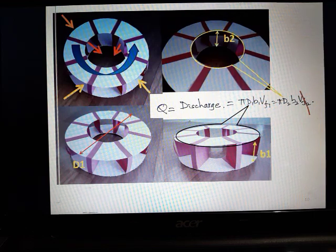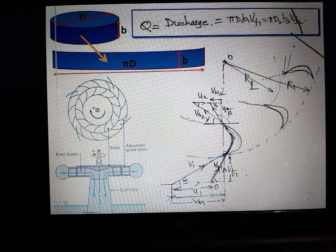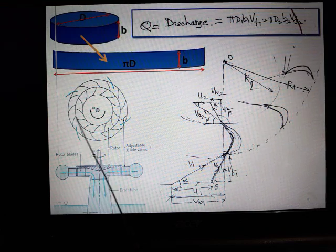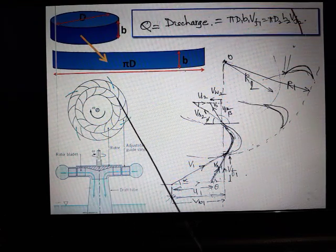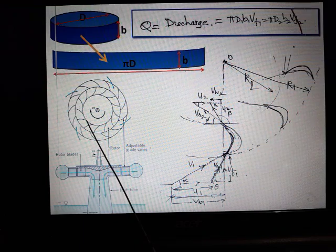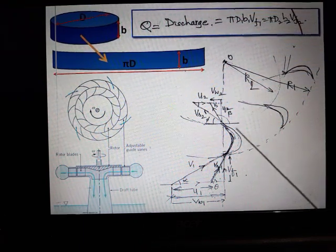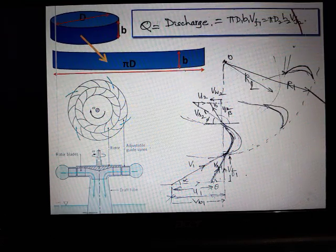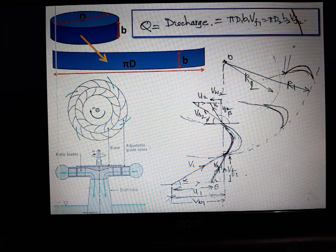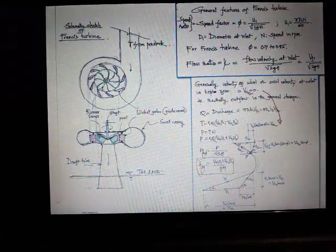If you go back and try to see, you'll be able to appreciate this formula. The discharge equals πD1B1Vf1, where D1 is the diameter at the inlet, which is the outer diameter. D2 is the diameter at the exit, which is the inner diameter. Here it is shown as r1 external and r2 as the internal.